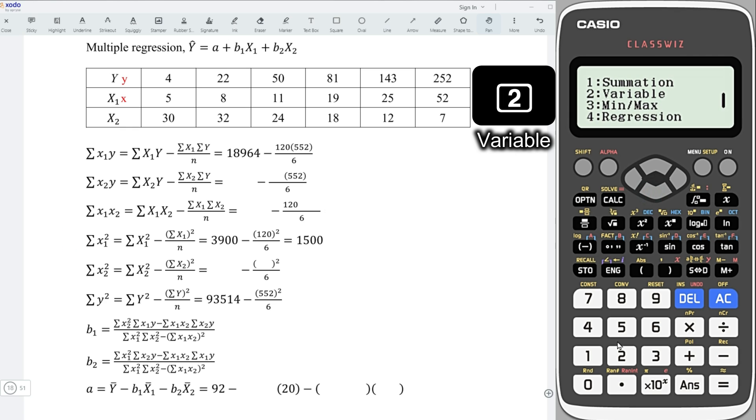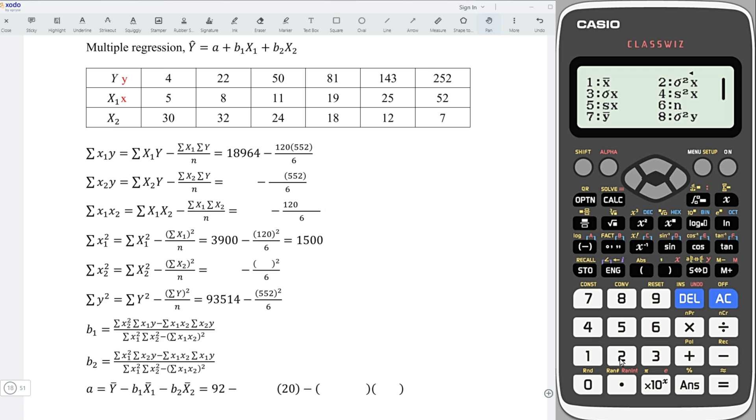Then, press on option, down, 2 variable. This time, we should choose the variance of y, that is 8. Also, multiply 6, and we should obtain the sum of squares for y.